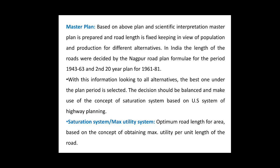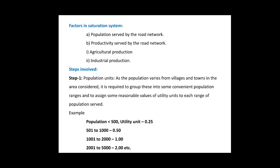The saturation system or the maximum utility system calculates the optimum road length for the area based on obtaining the maximum utility per unit length of the road. Hence this system is called the saturation system or the maximum utility system. The factors taken for obtaining the utility per unit length are: first, the population served by the road network, and second, the productivity served by the road network — which can be classified as agricultural production and industrial production.